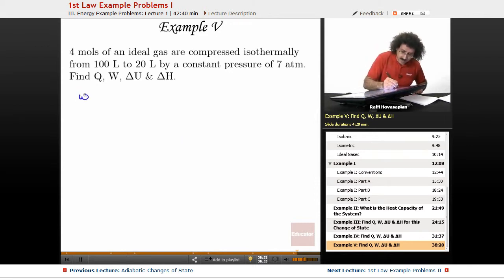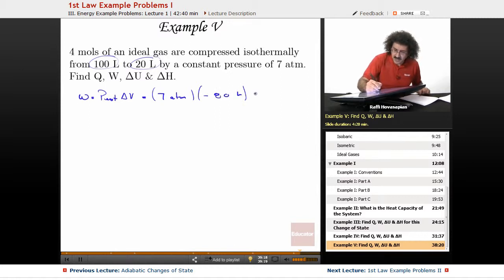Well, let's go ahead and do work first. Work is equal to the external pressure times the change in volume. They give us the change in volume. That's just 100 to 20, final minus initial. So it's 20 minus 100, which is actually minus 80. So the external pressure is 7 atmospheres and minus 80 liters, so we end up with minus 560 liter atmospheres.